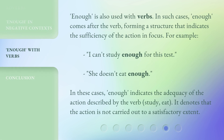'Enough' is also used with verbs. In such cases, 'enough' comes after the verb, forming a structure that indicates the sufficiency of the action in focus. For example: 'I can't study enough for this test.' 'She doesn't eat enough.' In these cases, 'enough' indicates the adequacy of the action described by the verb — study, eat — and denotes that the action is not carried out to a satisfactory extent.